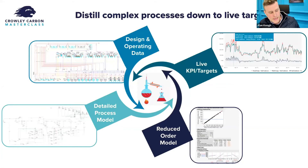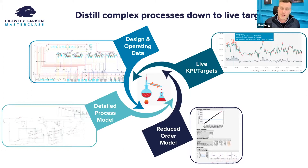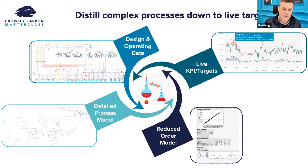So one way we do this — and Julian alluded to it as well — there's a lot of different terminology and buzzwords for this kind of process. There's digital twins, there's hybrid models, there's hybrid KPIs. But in essence, what they are is trying to distill down very complex systems into live targets for how the plant is running.